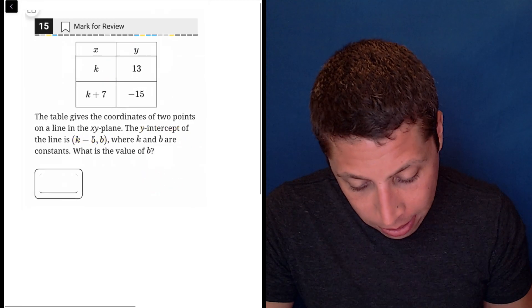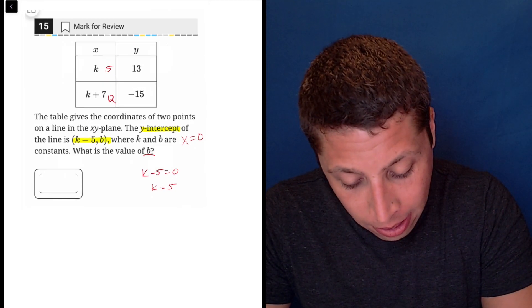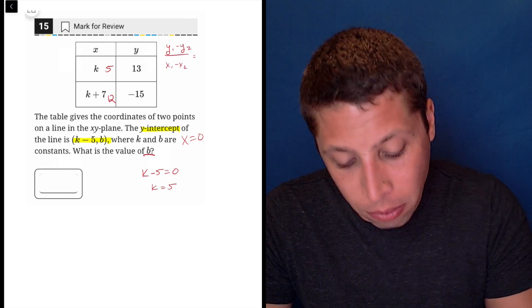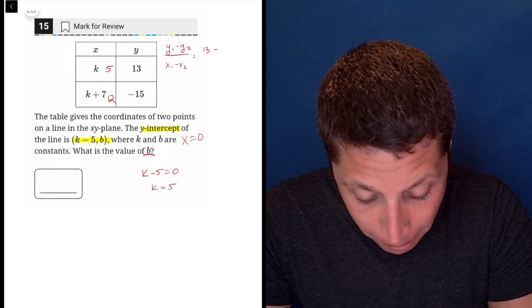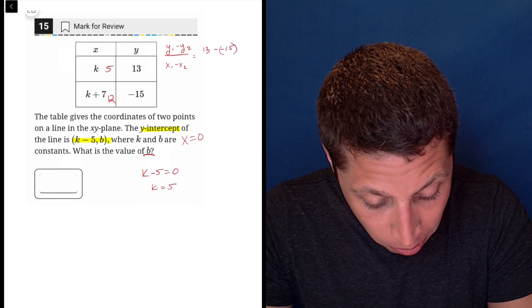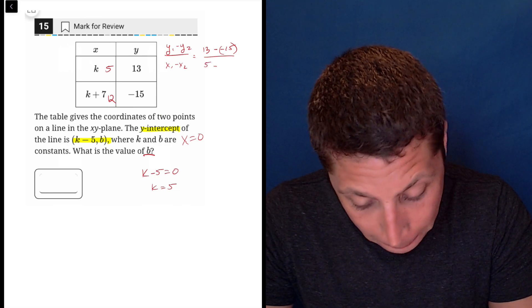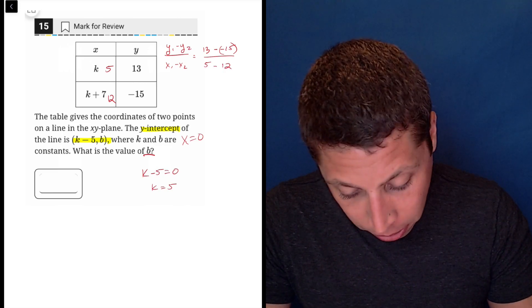Let's do some traditional stuff here where we find the slope of the line. Remember slope is y1 minus y2 over x1 minus x2, rise over run. So the two y's we're going to do 13 minus negative 15. Put the parentheses so you don't lose that negative. And then 5 is my k minus 12 is my other point, my other x.